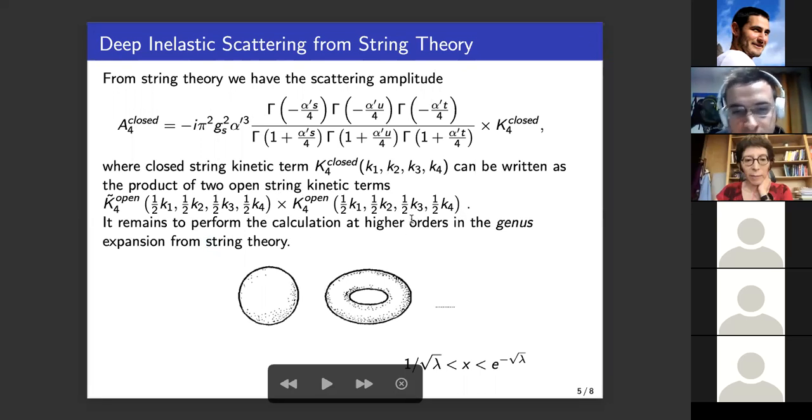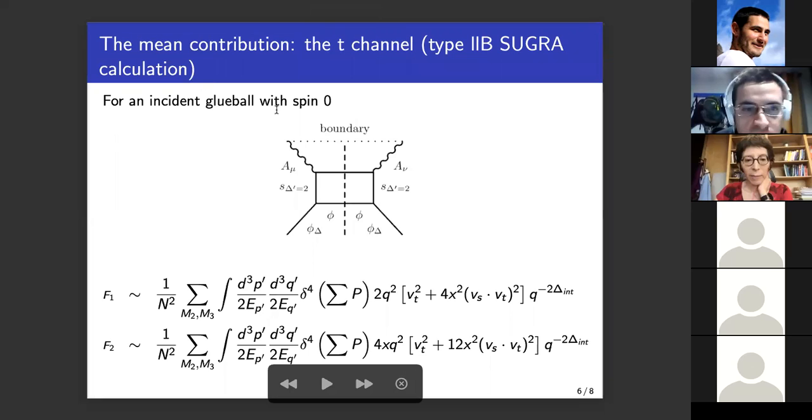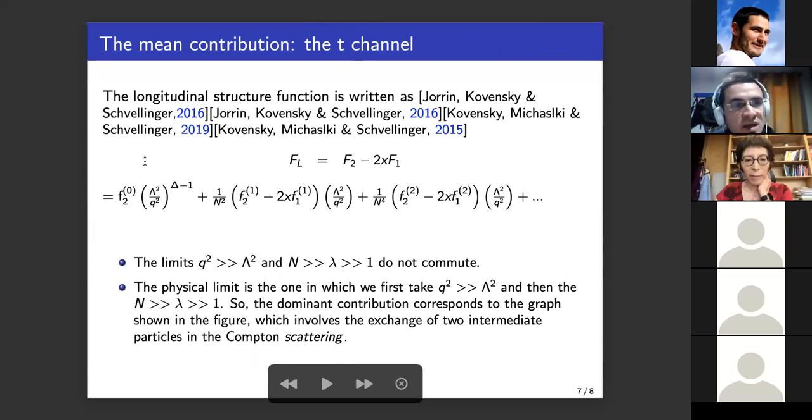Next. Okay, now the main contribution is the t-channel. But in type IIB supergravity calculation for CN glueballs, which have spin zero, we have the boundary of the space at S^5 cross AdS_5, for example, and we have two gravitons and two dilatons. And in supergravity we have two structure functions given by these two.